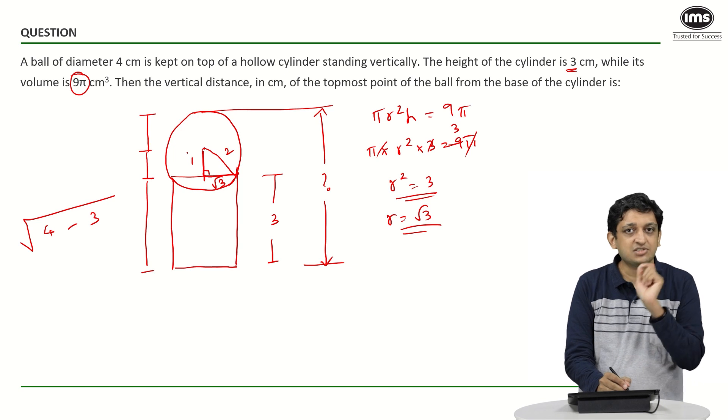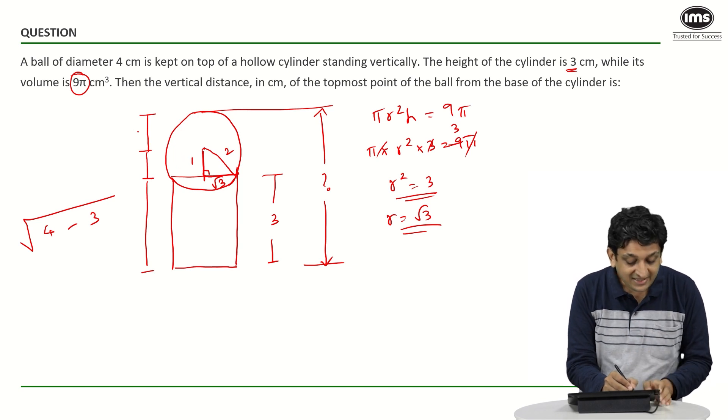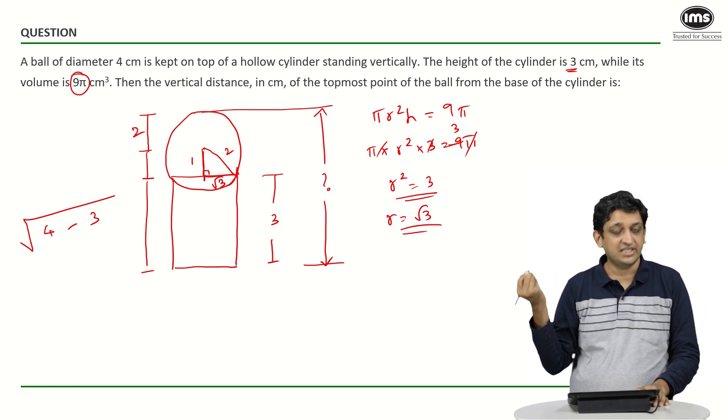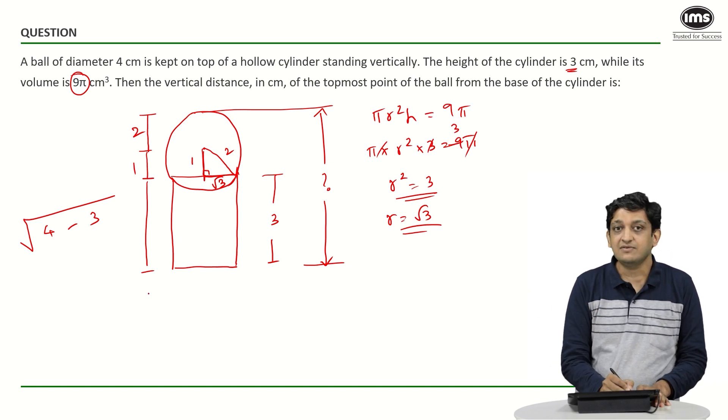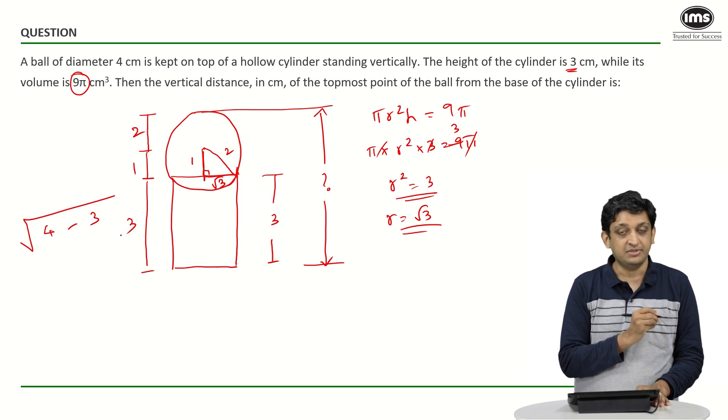Now I know that this radius of the sphere is 2 units and that is why this distance is going to be 2 centimetres. We have figured out that this length is nothing but 1 centimetre. And we know that the height of the cylinder is nothing but 3 centimetres.